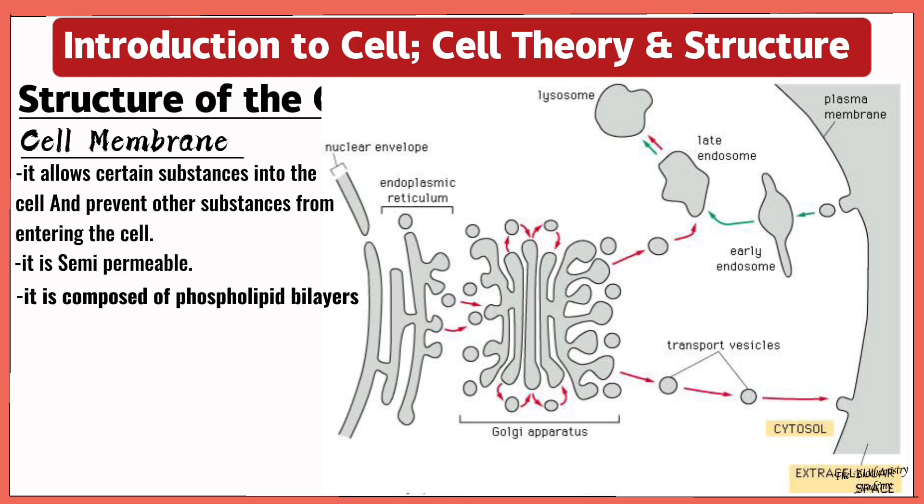This cell membrane is composed of phospholipid bilayer. We talked about this cell membrane in one of our playlists called the membrane biochemistry, so you can check it to understand how this cell membrane works. So once this vesicle reaches the cell membrane, it fuses with the cell membrane and becomes part of it, making the membrane to expand.